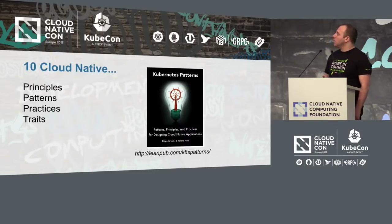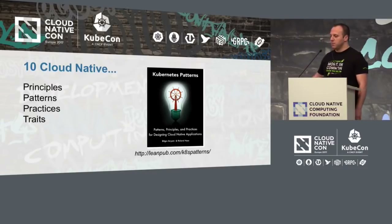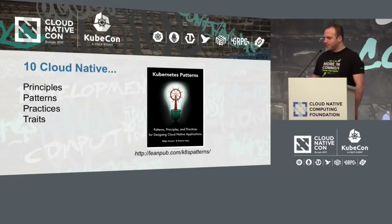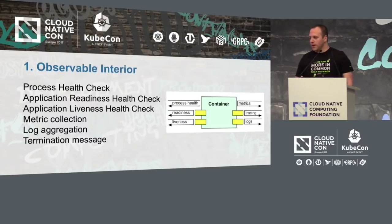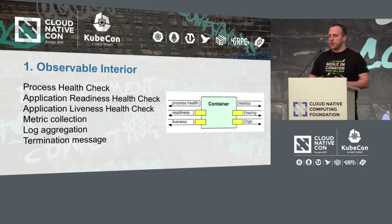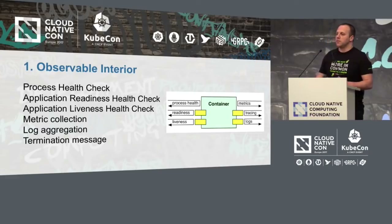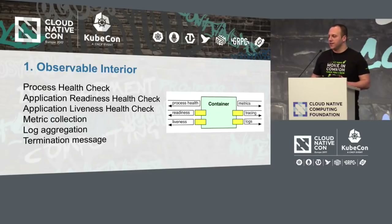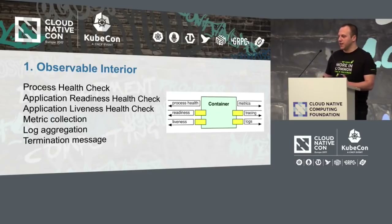In this talk, I want to go quickly over ten principles and patterns I'm trying to collect in this work-in-progress book. The very first fundamental prerequisite for an application to become cloud native is to be observable. What I mean by that is the application has to provide, as a very minimum, endpoints for different kinds of health checks.